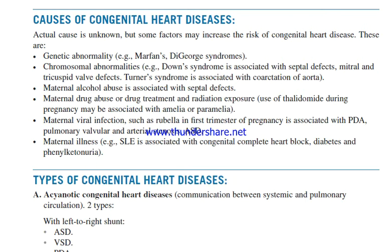The actual cause of congenital heart disease is unknown, but some factors may increase the risk. These include genetic abnormalities such as Marfan syndrome and Noonan syndrome. Chromosomal abnormalities — for example, Down syndrome is associated with septal defects and mitral and tricuspid valve defects. Turner syndrome is associated with coarctation of aorta. Maternal alcohol abuse is associated with septal defects. Maternal drug abuse, drug treatment, and radiation exposure — use of thalidomide during pregnancy may be associated with amelia or phocomelia.